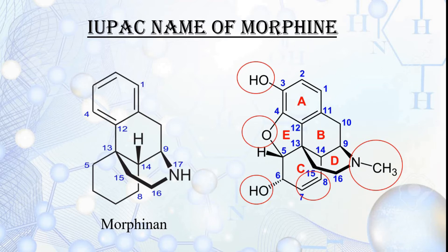For naming morphine, the morphinan ring system is considered as the parent nucleus. The differences between the morphinan ring and morphine structure are highlighted and named alphabetically: first, 7,8-dihydro; then 4,5-epoxy; then methyl at the 17th position. Using the parent nucleus name 'morphinan' and attaching the suffix for two OH groups at positions 3 and 6 gives the IUPAC name: 7,8-didehydro-4,5-epoxy-17-methyl morphinan-3,6-diol.